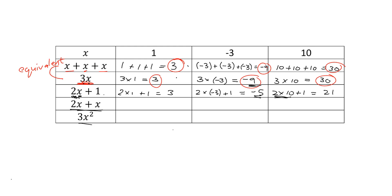Pause the video and try that for yourself. Work out the values when x is 1, minus 3, and 10, and then tell me if they are equivalent. Okay, let's go over that. For 2x plus x: you should have got 2 times 1 plus 1, which is 3. Then 2 times minus 3 plus a minus 3, which gives you minus 9. And 2 times 10 plus 10, which gives you 30. You are getting exactly the same answers as for 3x, so 2x plus x is equivalent — because you've got 2 x's and then you add on another x, which is exactly the same as having 3 x's.